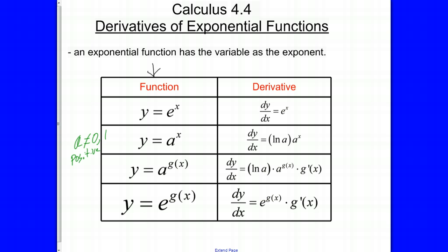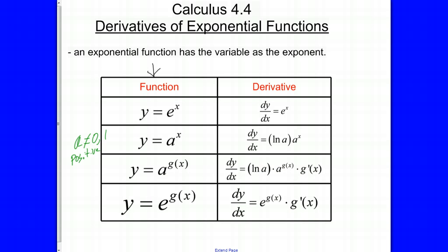This first column shows the exponential functions and then their corresponding derivatives. So e to the x, or a to the x, where a is a number other than 0 and other than 1, and it's got to be positive — so 2 to the x, 3 to the x, 1 half to the power of x. The other type is when the exponent is not just plain x, but a different function — 2x, 3x, x squared plus 5x minus 7, whatever. When you have a function as an exponent, it changes what we've got to do for the derivative.